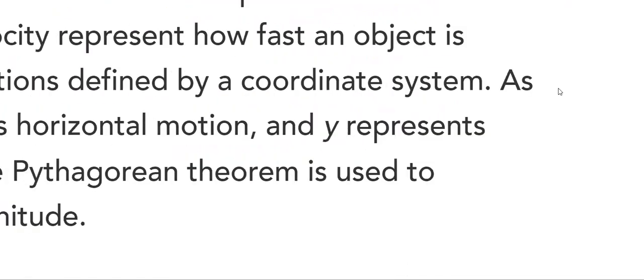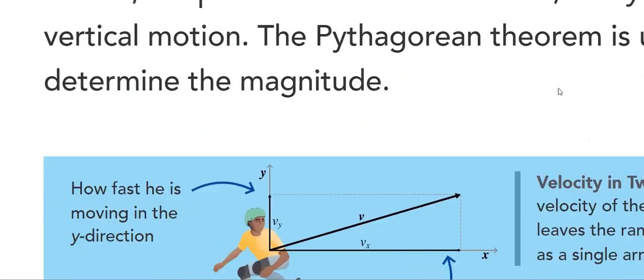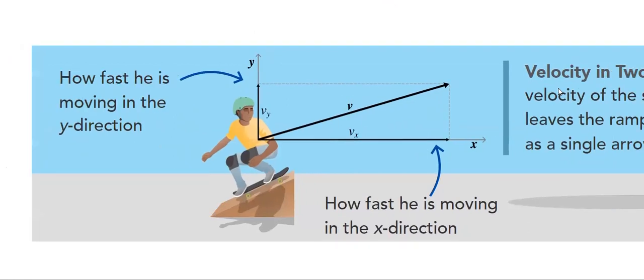The components of velocity represent how fast an object is. As an example here, using the Pythagorean theorem, we have how fast he's moving in the y-direction. This is his velocity, and we will analyze it or resolve it into x component and y component. Let's see more examples.